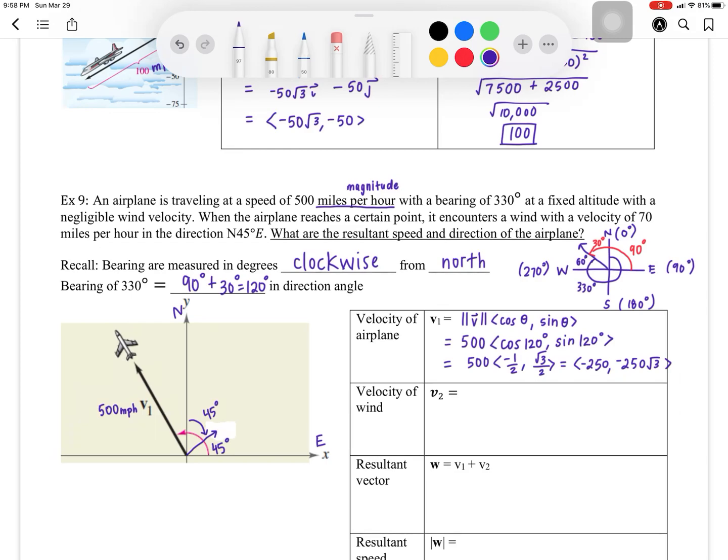That means your direction angle is 45 degrees. It's the one that's measured from the positive x-axis. So same thing, you're going to take the magnitude of that wind vector. I'm going to go ahead and call that V2 here, which is the wind. And what is the magnitude of the wind? It was 70. So you're going to take 70, and then cosine of 45 degrees, and then sine of 45 degrees. This should give you 70 square root of 2 over 2, and square root of 2 over 2 again. That's going to give you 35 square root of 2, and 35 square root of 2.